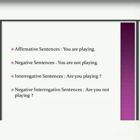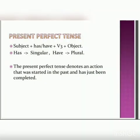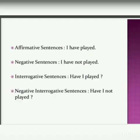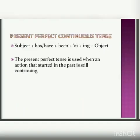Present perfect tense is used to indicate an action that has been completed just now, or an action that started some time ago and is still continuing till the present time. For example: 'Ram has finished correcting his homework,' 'We have known the family for many years.'